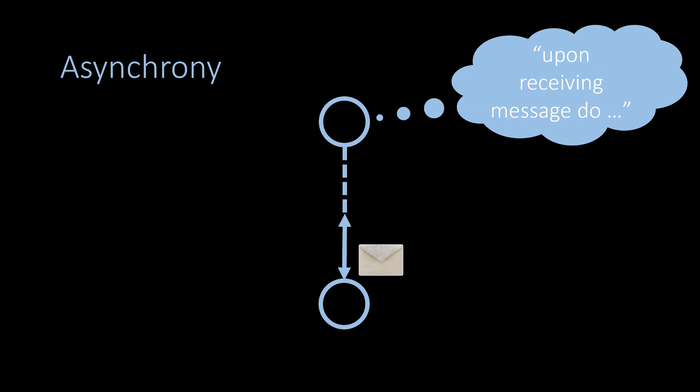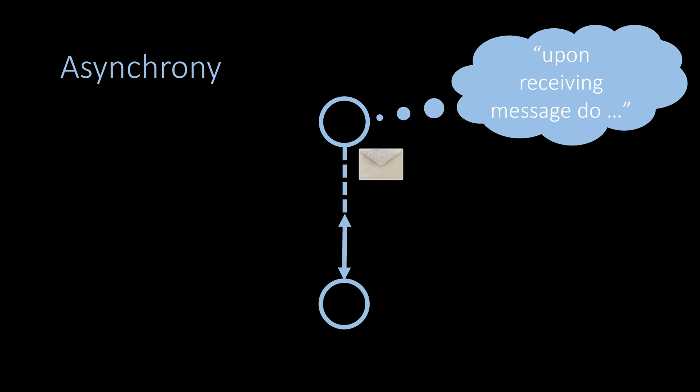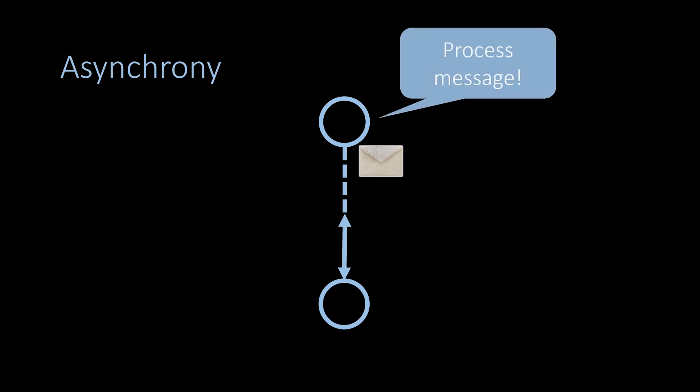In the asynchronous communication model, the nodes cannot make any assumptions about the time it takes for messages to arrive. In fact, while sent messages are guaranteed to arrive eventually, they may be delayed by an arbitrary amount of time. A node therefore cannot wait for a certain time to receive a certain message; instead every node can only react to messages when they arrive. Since message delays can vary greatly in large wide area networks like the internet, this appears to be a reasonable model.